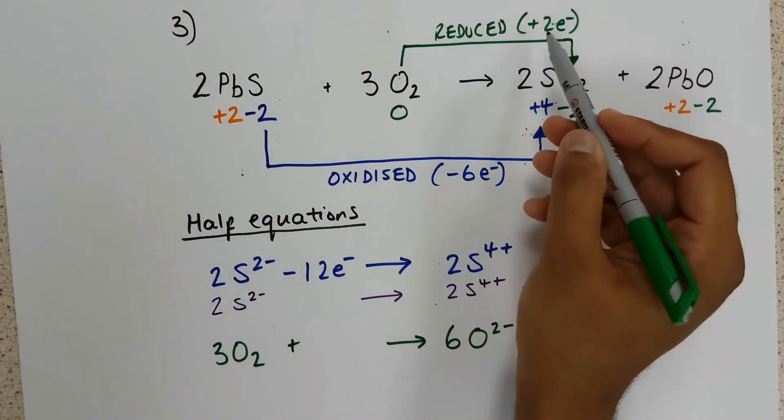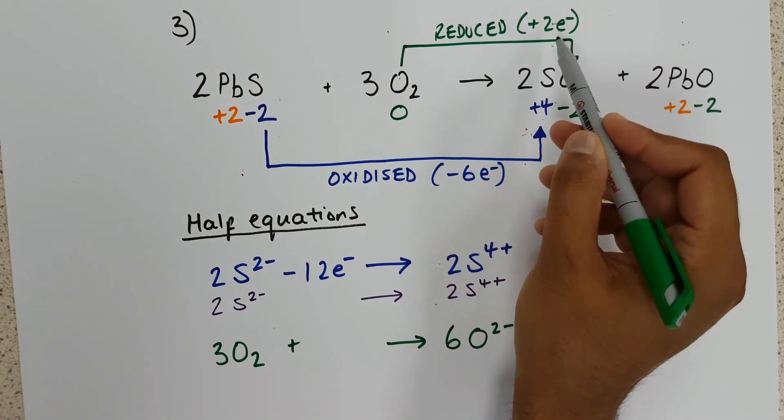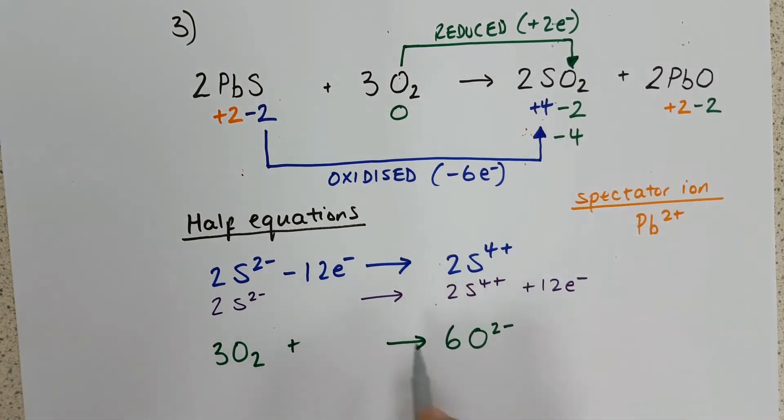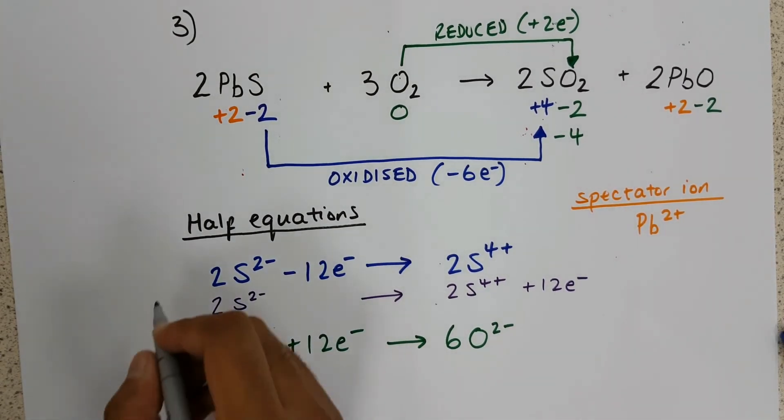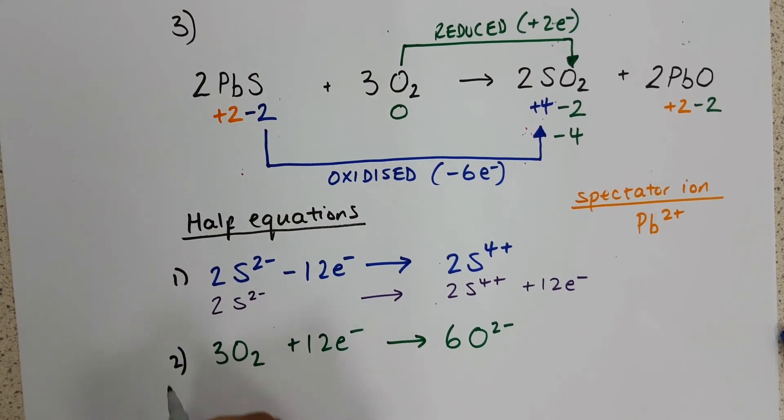And in this example, we've already mentioned that each oxygen gains two electrons. There are six oxide ions, so twelve electrons are added. That completes our two half equations.